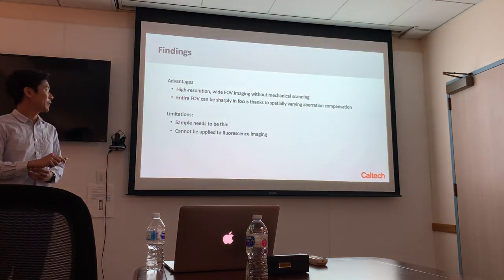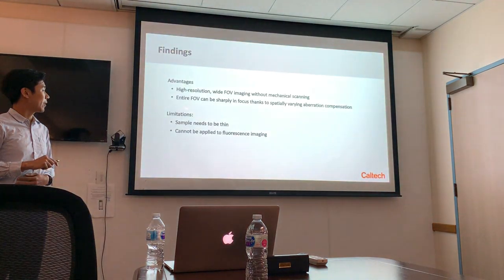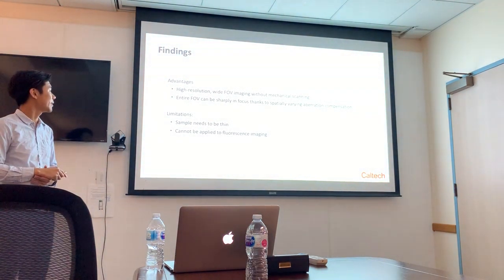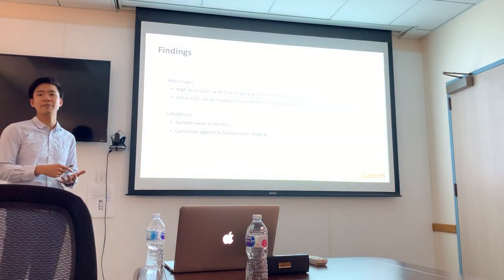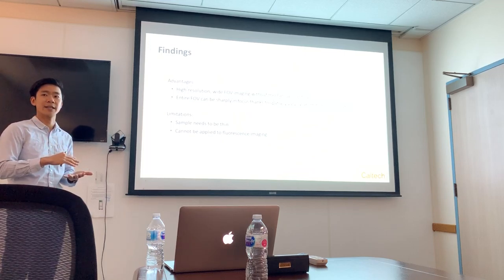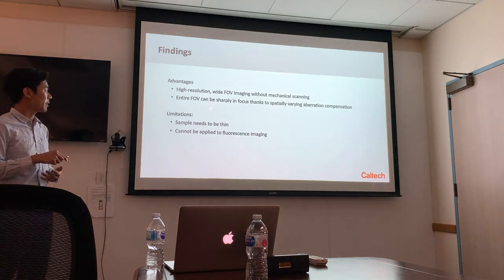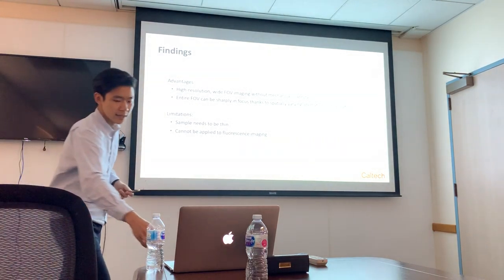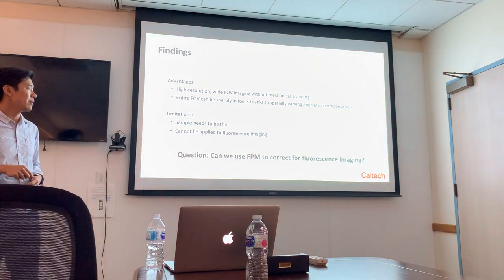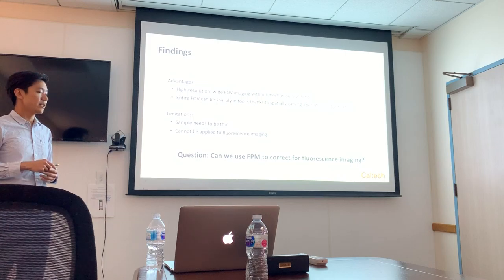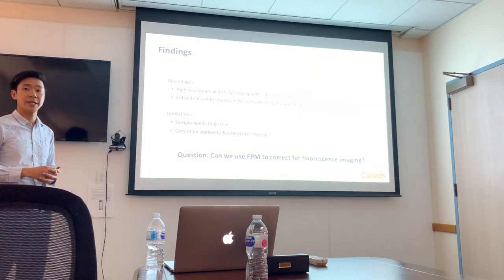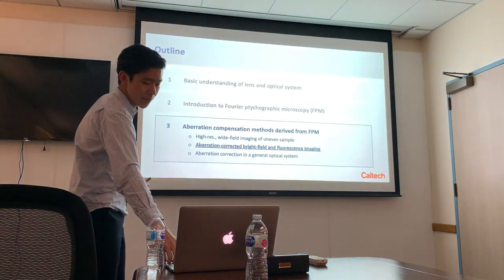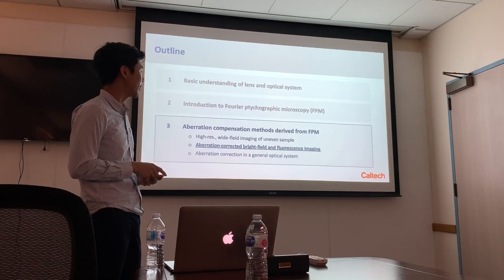I was able to demonstrate high-resolution wide-field imaging without mechanical scanning and show that the entire field of view can be sharply in focus regardless of spatially varying aberrations. But there are limitations: the sample needs to be thin, as required by the FPM algorithm, and this aberration correction method cannot be applied to fluorescence imaging because FPM is a coherent imaging modality. So I asked the question: can we use FPM to actually correct for fluorescence imaging? Fluorescence imaging is widely used among biologists to study cellular dynamics, so this could make FPM more useful. This segues into the next part: aberration-corrected bright-field and fluorescence imaging.